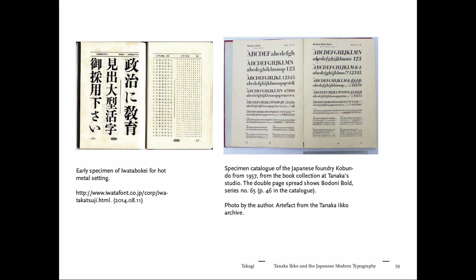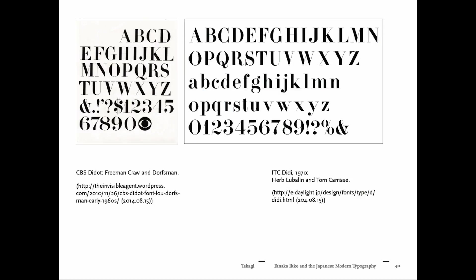Tanaka had two typefaces that were a big inspiration. On one hand, the Japanese typeface Iwata Boke — not a display face but a headline typeface. On the other hand, Bodoni. He was looking at how to combine those two in one design. He always said Bodoni has very hard contrast but is elegant and strong at the same time — a description that also fits Dorfsman and Lubalin's work well, and those typefaces had an impact on Tanaka.